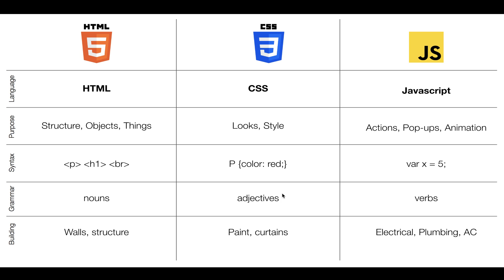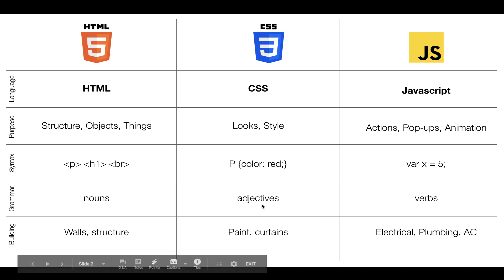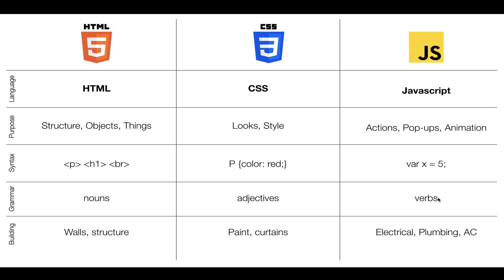If you think of CSS in terms of adjectives — adjectives describe things. So is it tall, short, what's the color, how wide is it, is it transparent, those types of things. When you're describing it. And then JavaScript is like verbs — it's all the actions like open, close, switch slides, cause pop-up, submit, those sorts of things.